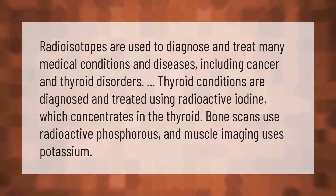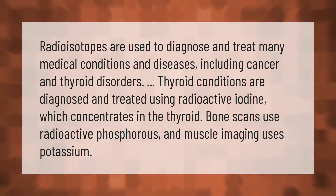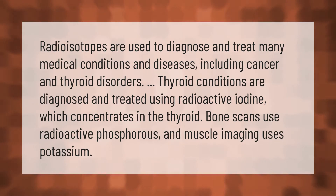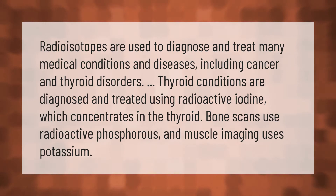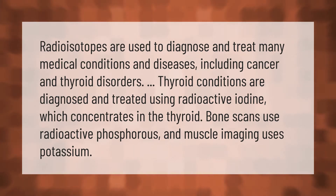Radioisotopes are used to diagnose and treat many medical conditions and diseases, including cancer and thyroid disorders. Thyroid conditions are diagnosed and treated using radioactive iodine, which concentrates in the thyroid. Bone scans use radioactive phosphorus, and muscle imaging uses potassium.